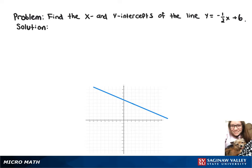We're going to find the intercepts of the line y equals negative one-half x plus 6. We'll start with the x-intercept and sub 0 in for y. We've got 0 equals negative one-half x plus 6.